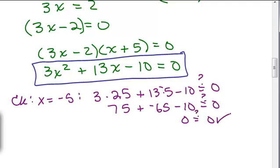So yes, that's a little confusing, sorry, 13 times negative 5. So negative 5 is the solution, and then you could go ahead and plug in 2 thirds to make sure that's a solution as well.